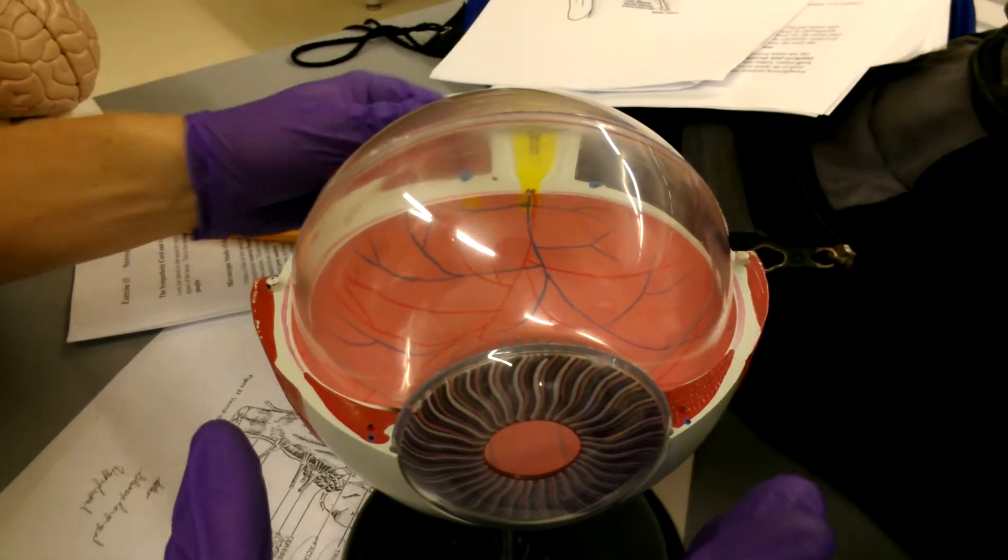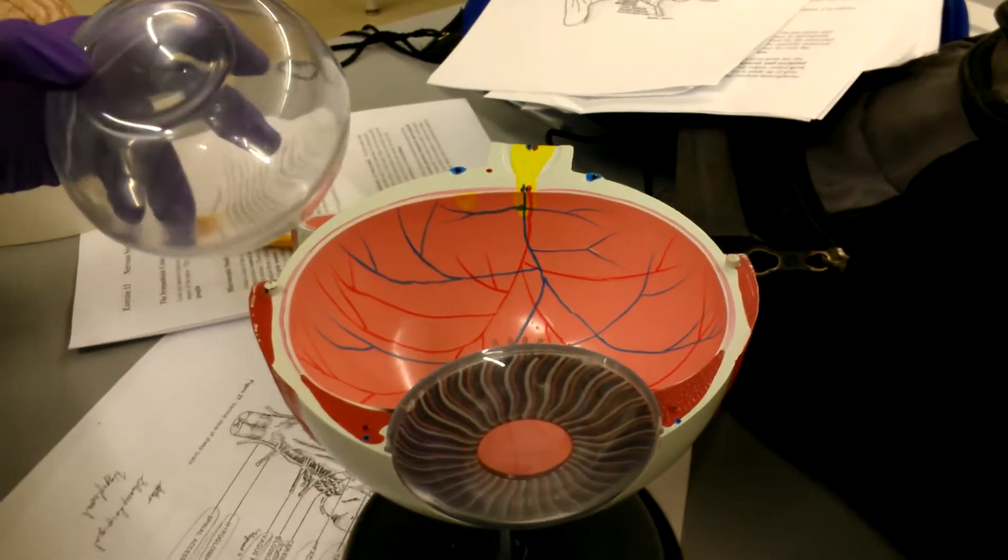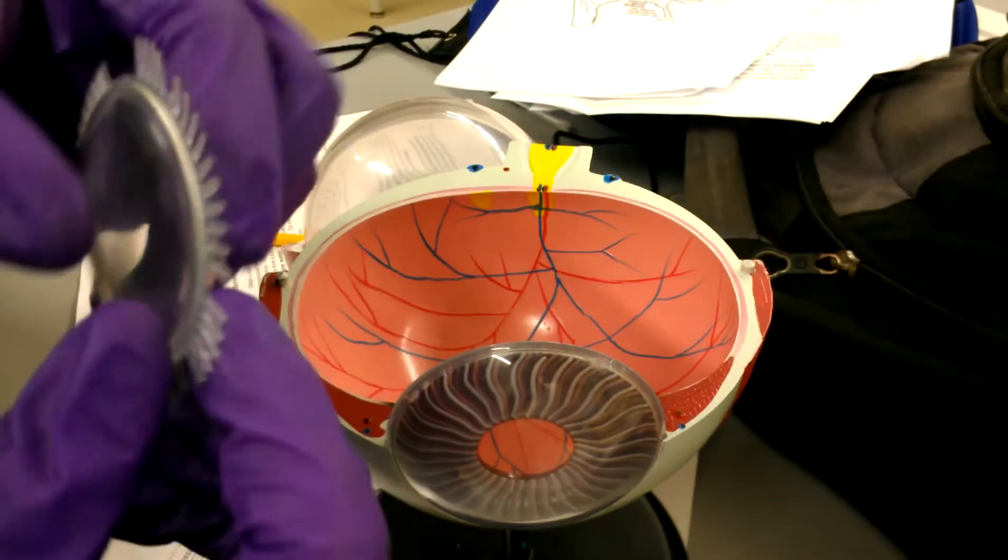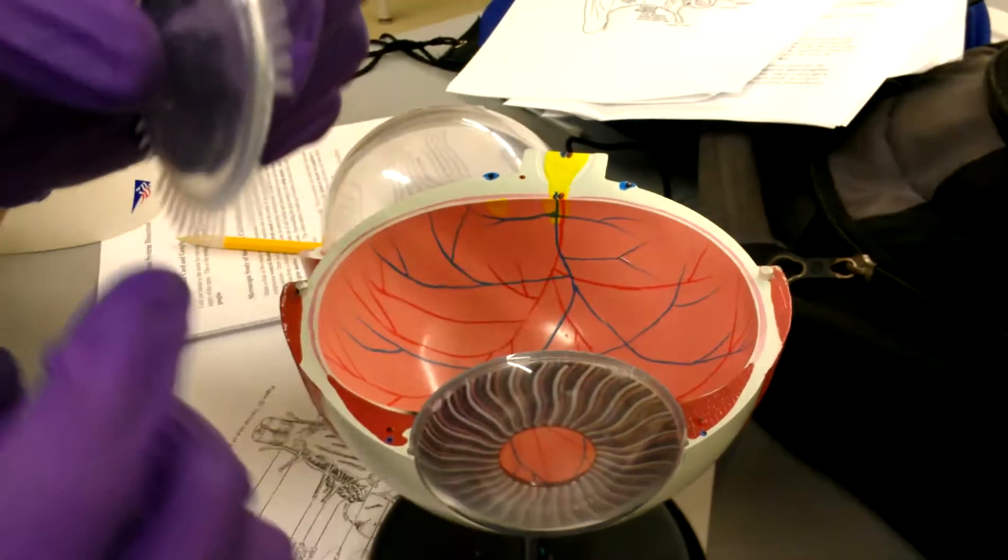Open it up here. And this big hollow part is the vitreous body. Right here we have the lens which has the ciliary body around it.